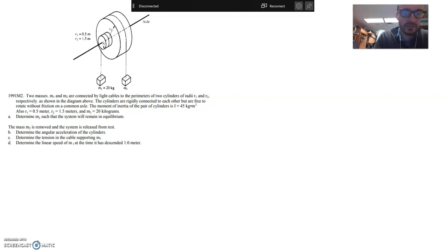We have two masses connected by light cables to the perimeter of two cylinders, as shown in the diagram. The cylinders are rigidly connected to each other, so they all twist in one big glob there, but they're free to rotate. The moment of inertia of the pair of cylinders is 45. R1 is 0.5 meters, the little guy right here, and R2 is 1.5 meters, the big radius. It also gives us the mass of block one. First, it says determine M2 such that the system will remain in equilibrium. So how much mass do we need on this guy in order to remain in equilibrium with the mass over here?